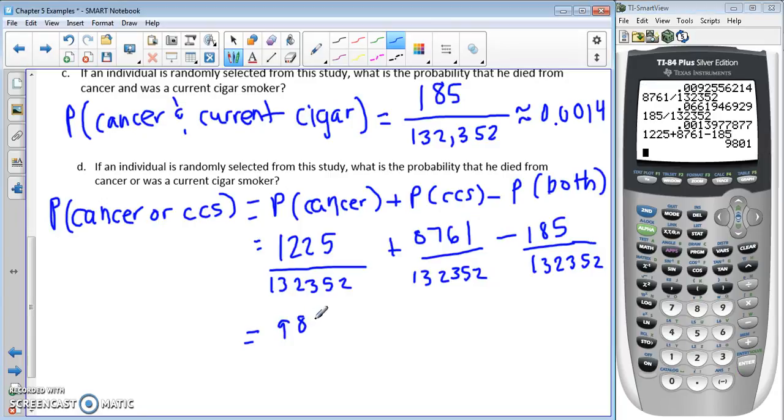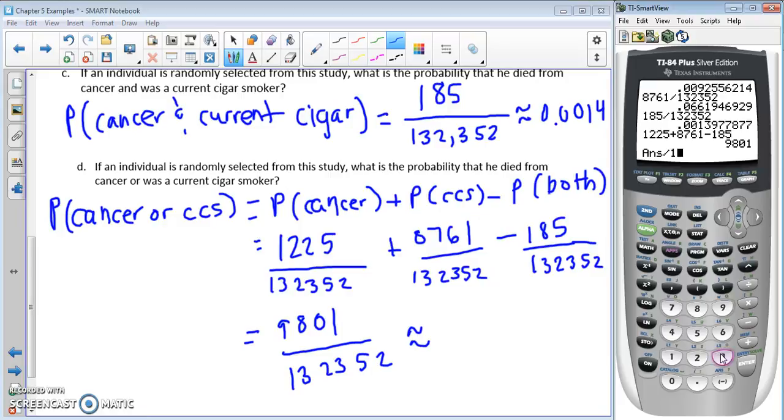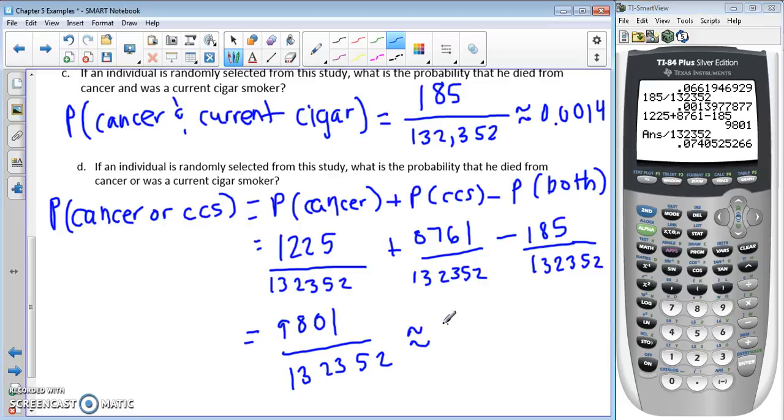Let's look at our decimal approximation: 9,801 divided by 132,352 equals 0.0741. That isn't too unlikely, but there's a pretty small chance there, a 7% chance.